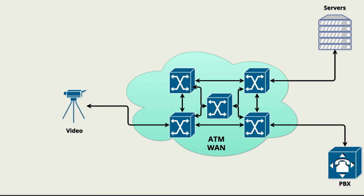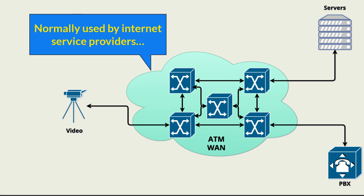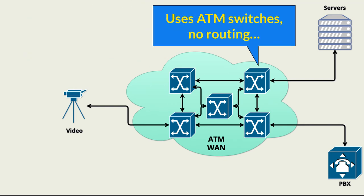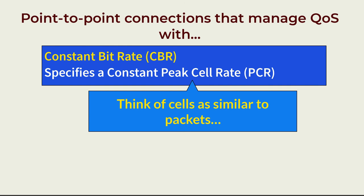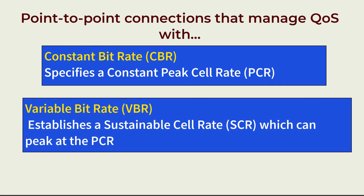Asynchronous Transfer Mode, or ATM, is normally used by internet service providers on private, long-distance networks operating at layer 2, and it's a high-speed networking standard. It supports both voice and data communication, designed to integrate voice and data networks. ATM doesn't use routing. Instead, it uses ATM switches that establish point-to-point connections that meet quality of service challenges in four ways. First, Constant Bit Rate, or CBR, specifies a constant peak cell rate, or PCR. Second, Variable Bit Rate, or VBR, establishes a sustainable cell rate, or SCR, which can peak at a certain level, the PCR.